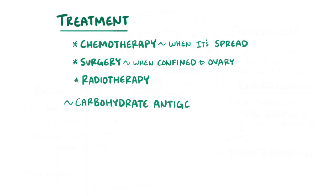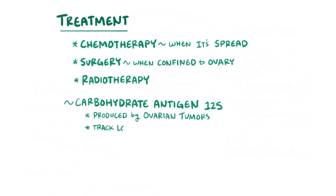Carbohydrate antigen-125, called CA-125, is a protein produced by various types of ovarian tumors, so tracking levels of this biomarker in the blood can help monitor response to therapy and potential relapse.